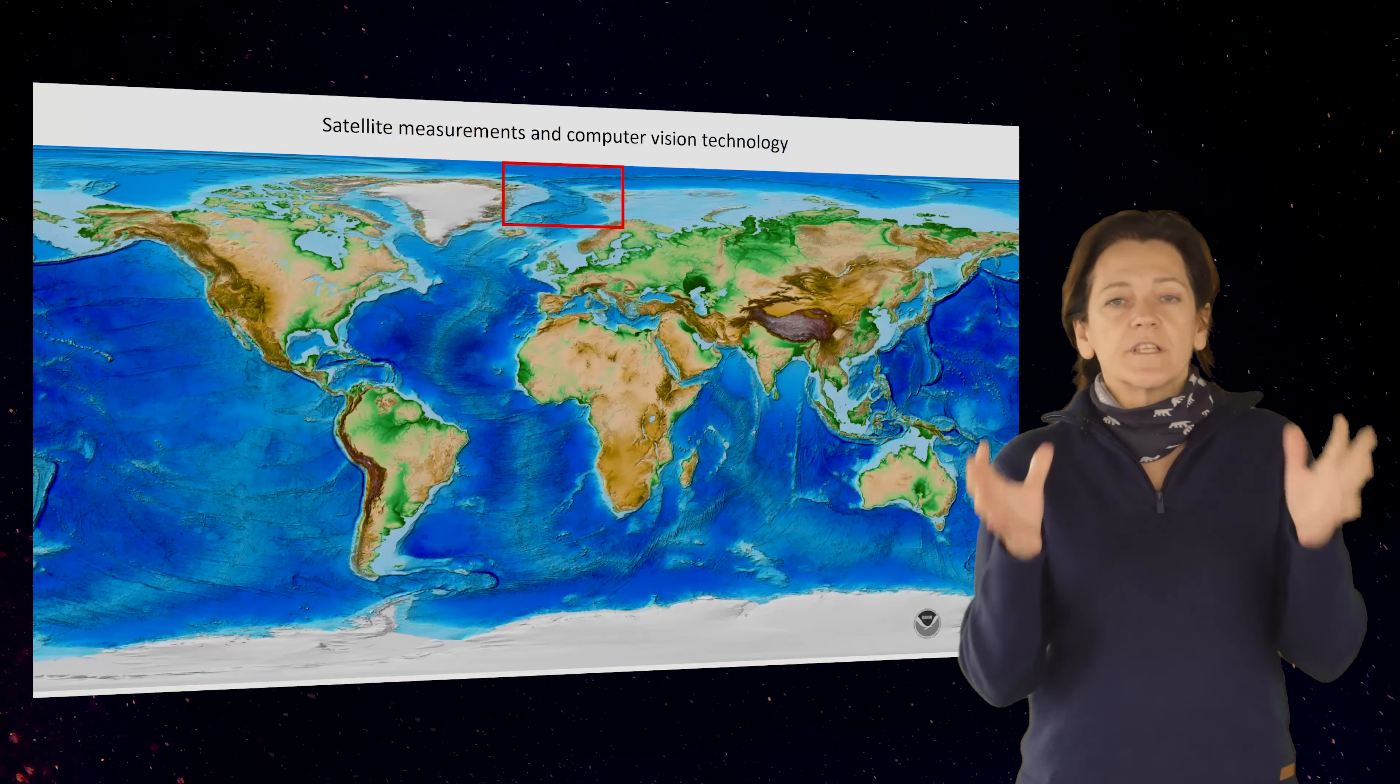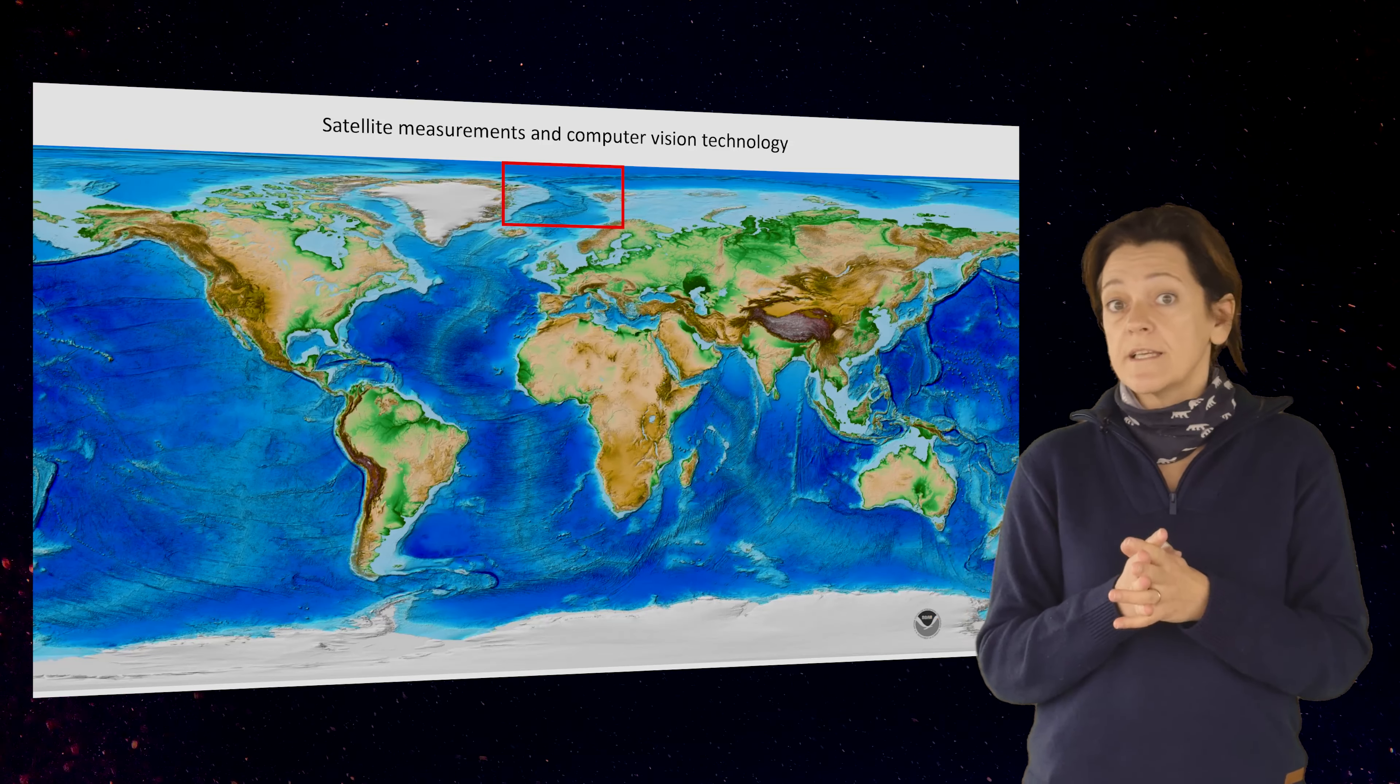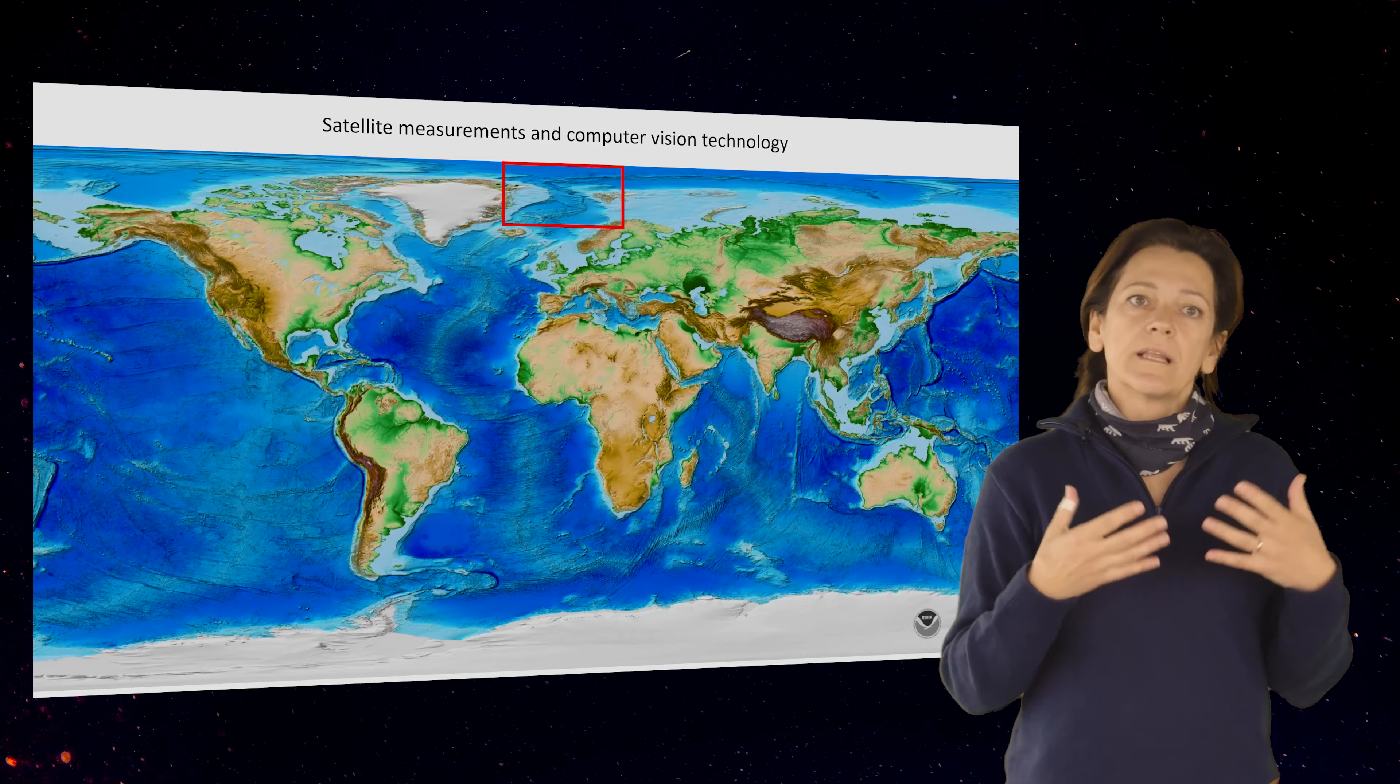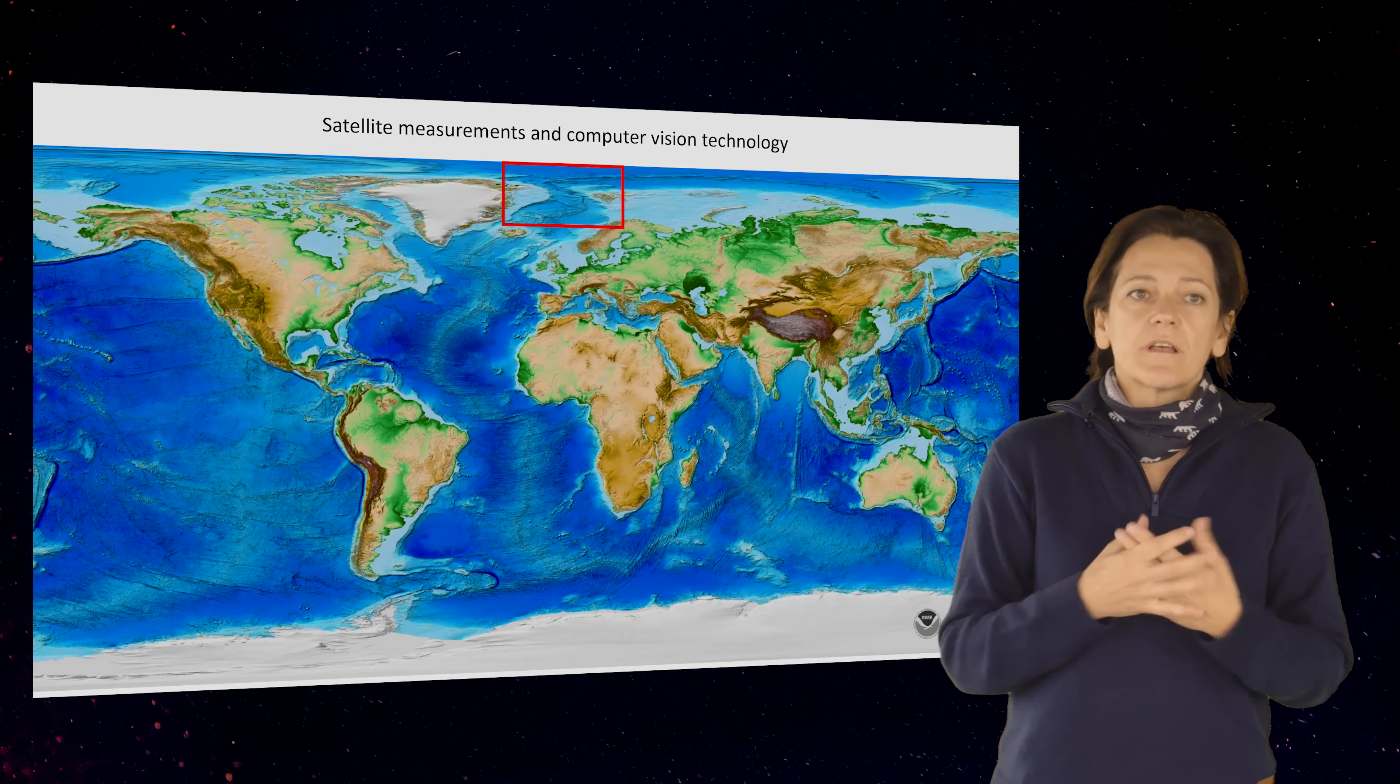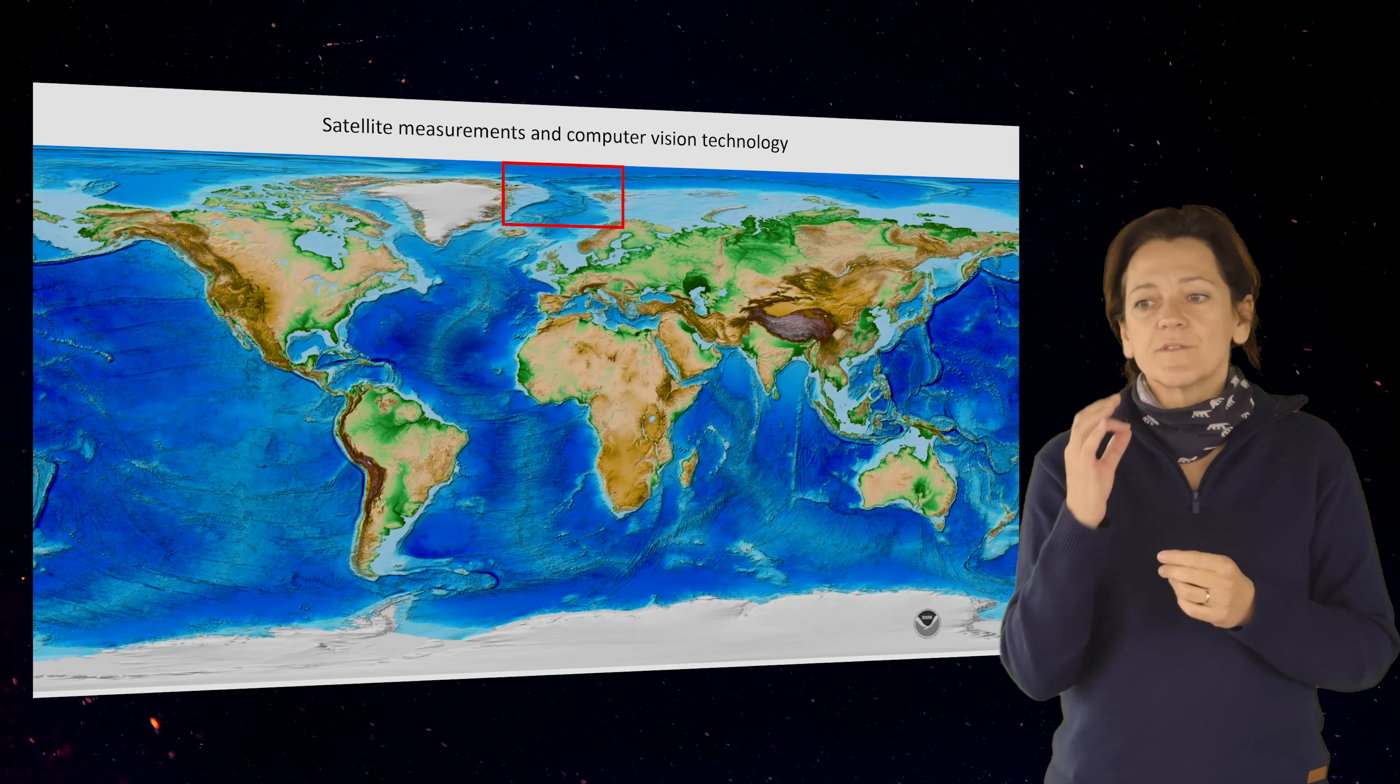Today to have this global view of the ocean we use satellite and especially satellite altimetry, that means that measuring the gravity field is able to provide this global view with good detail but still not enough to see very well all the variability of landforms that characterize the submarine domain.